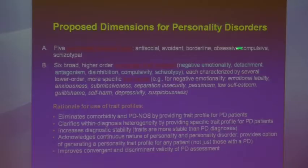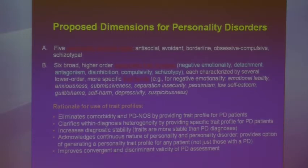Each of these domains is characterized by several lower-order, more specific trait facets. For negative emotionality, you would have these — they look kind of NEO-like — with more specificity of traits. The rationale for using these trait profiles is the huge amount of comorbidity and NOS diagnoses in personality disorders. If the most common diagnosis is NOS, the idea is to be more precise and use dimensional ratings of personality traits.